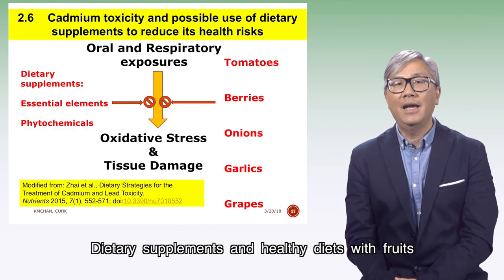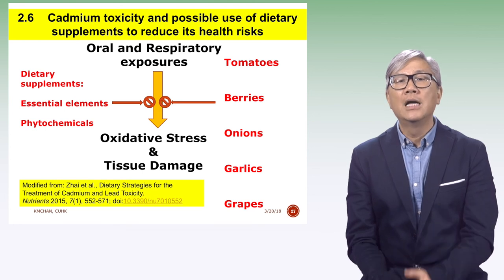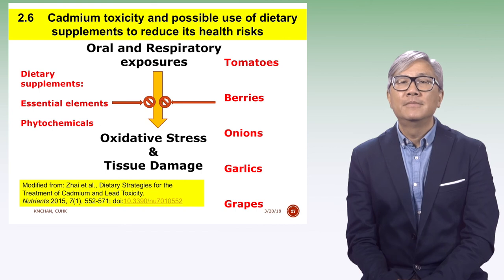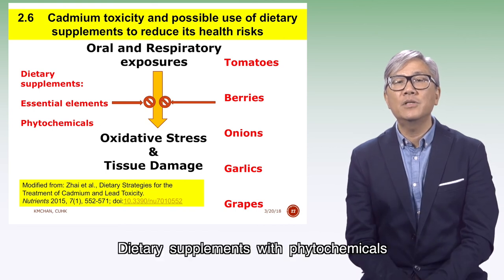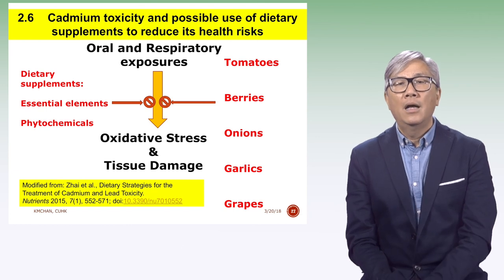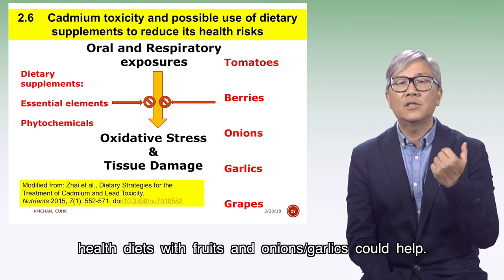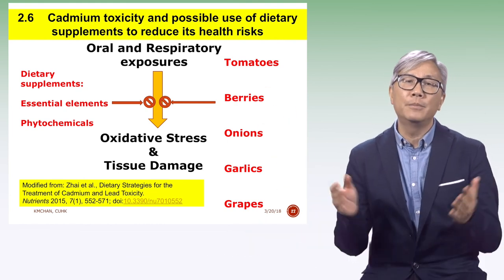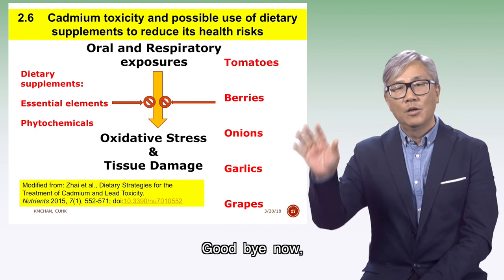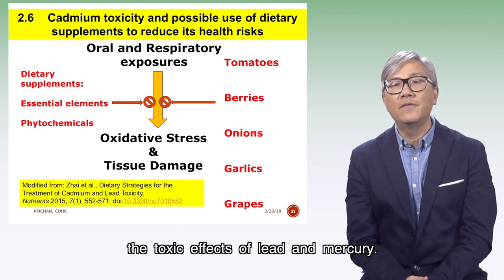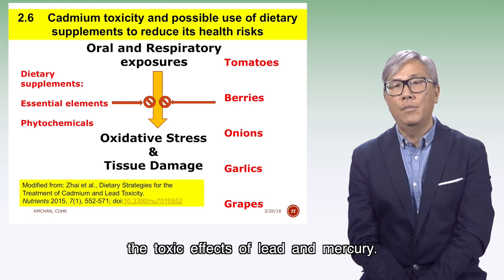Dietary supplements and healthy diets with fruits can help reduce cancer risk from cadmium. Dietary supplements with phytochemicals and essential metals, as well as healthy diets with fruits, onions, and garlic could help. Goodbye now — I stop here and the next video explores the toxic effects of lead and mercury.